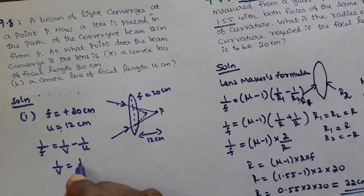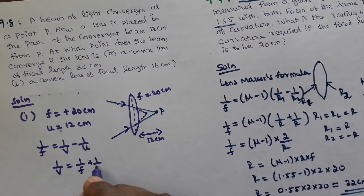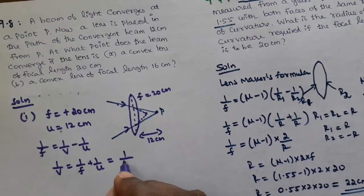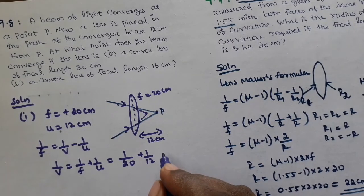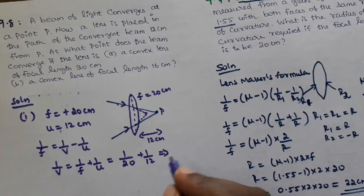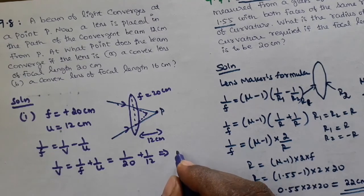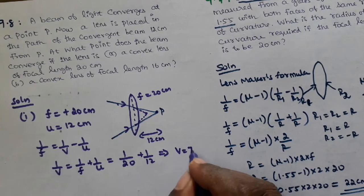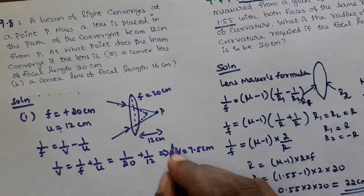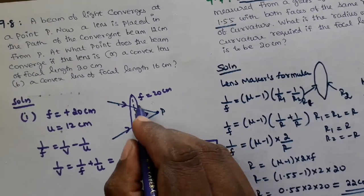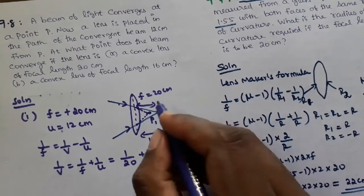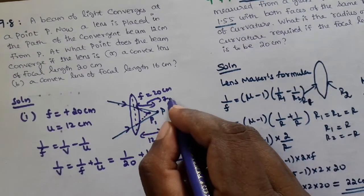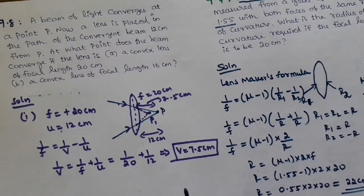Substituting the values and calculating, we get V = 7.5 cm. This is the new image distance from the lens.